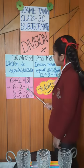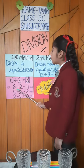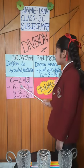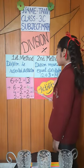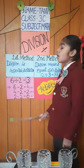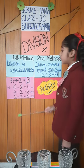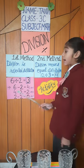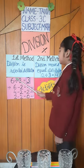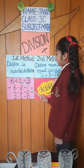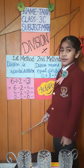6 minus 2 equals to 4. 4 minus 2 equals to 2. 2 minus 2 equals to 0. How many steps we have subtracted? 1, 2, 3. So 6 divided by 2 equals to 3.